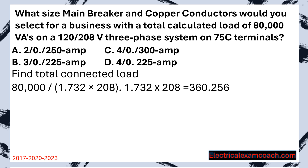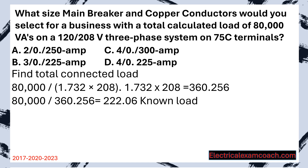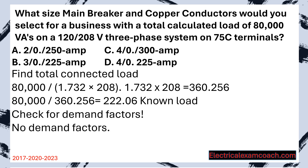We take 1.732, we multiply it by our system voltage, which is 208, and that gives us that 360 value. Now we can divide just like normal. We take the 80,000 VAs, divide it by the 360, and that gives us a 222 amp known load, by which we can size our breaker and our wire. But first, we must check for demand factors. In this case, there are no demand factors, so we can size like normal.